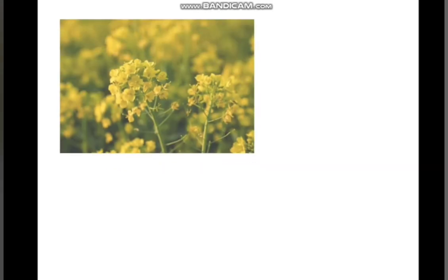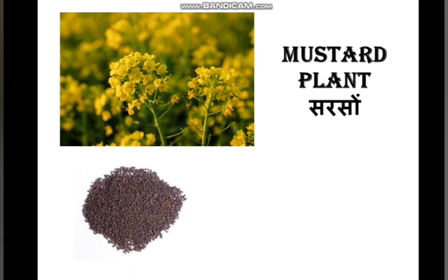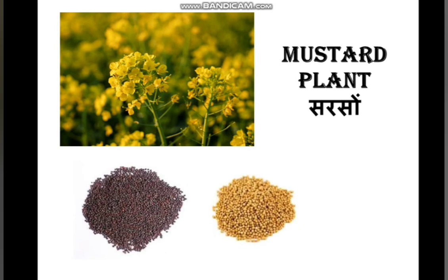Now the next picture shows beautiful yellow flowers. This is the picture of a mustard plant. In Hindi it is called sarsu. It comes in the form of black and yellow seeds — sometimes we get black sarsu or yellow sarsu. This is the seed of this plant.